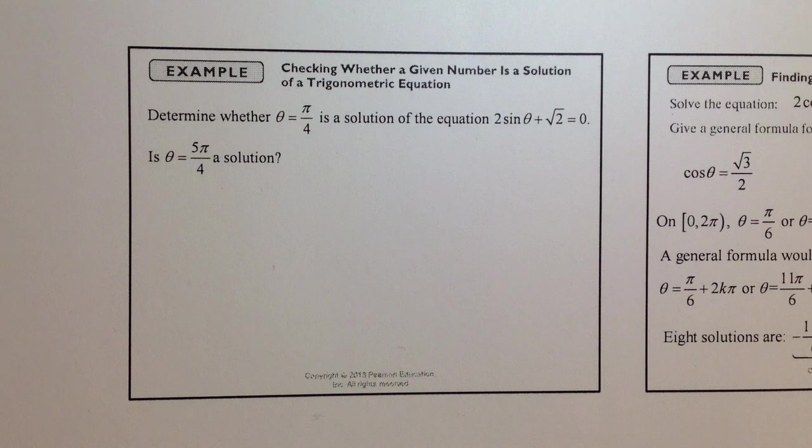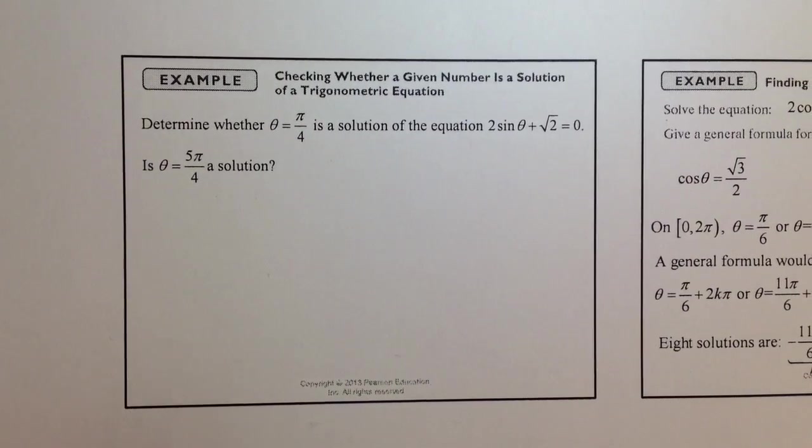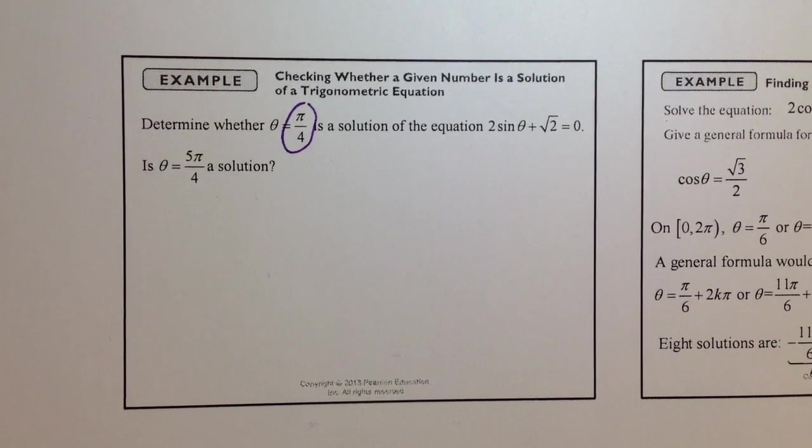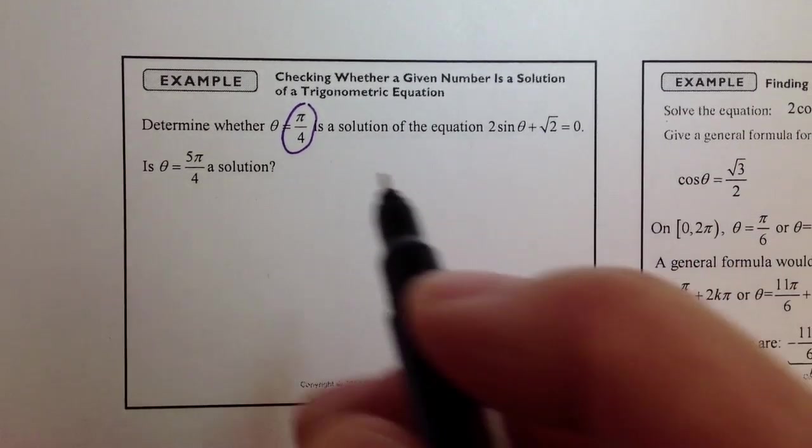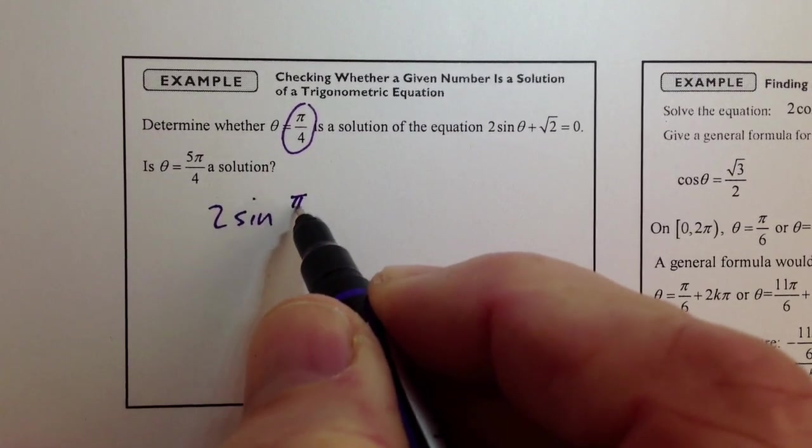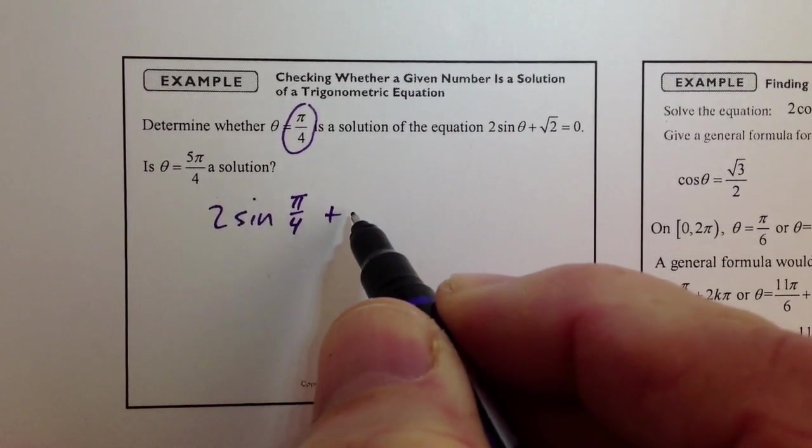So if you get a solution, let's say pi over 4, and you're asked is that a solution to this given equation, then you just replace theta with pi over 4, and you ask yourself, well,